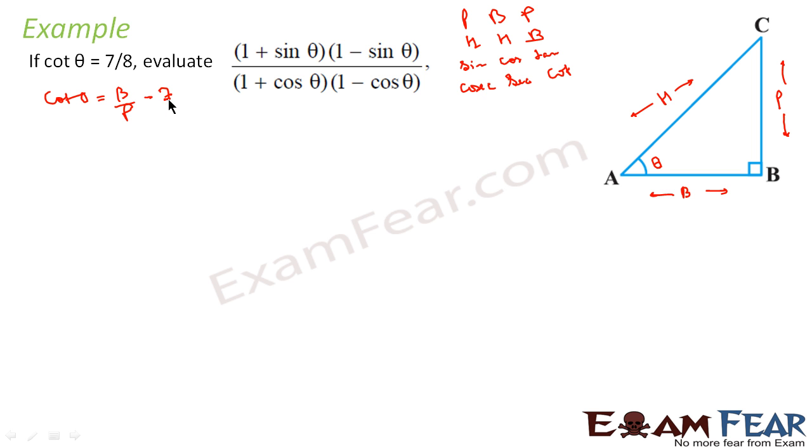When cot θ is equal to B by P equals 7 by 8, if I assume B is 7, P is 8. Let me find the value of H. AC will be root of AB square plus BC square, which is root of 7 square plus 8 square, that is 49 plus 64, that is root of 113.